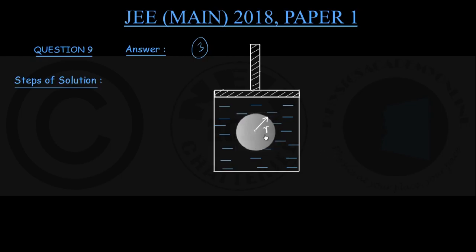This is the sphere of the solid whose bulk modulus is capital K. The piston is of negligible mass and its cross-sectional area is equal to small a. So in this container surrounded by liquid, a solid of bulk modulus capital K and radius R — since the piston is massless, the pressure on the solid equals atmospheric pressure plus hydrostatic pressure from the liquid column above it. A block of mass M is placed on the piston, and the question is: what is the fractional decrement in the radius of this sphere?